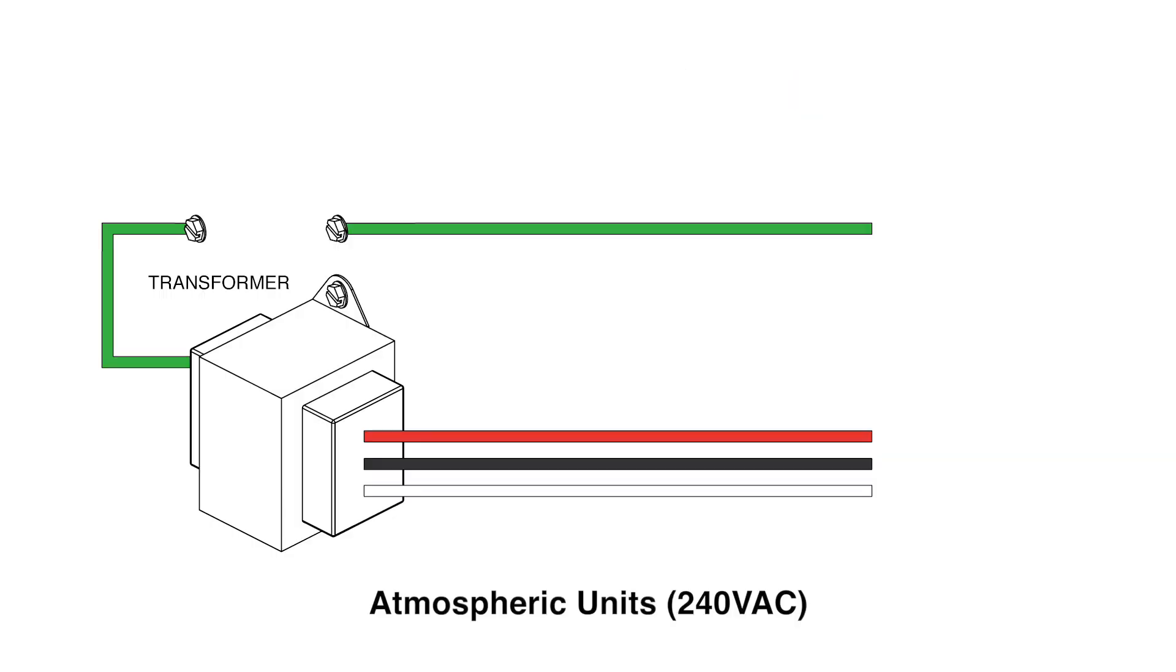For 240 volt wiring, make sure you have 240 volts by checking across the two hot leads at the source of the incoming wires.